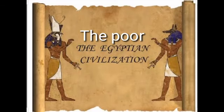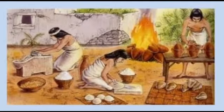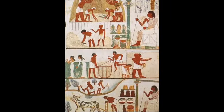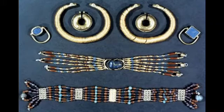The poor worked as servants or laborers in rich households. Their houses were very small, often consisting of only one room. The poor wore jewelry made of cheap metals decorated with pieces of brightly painted clay.